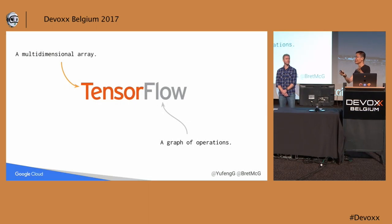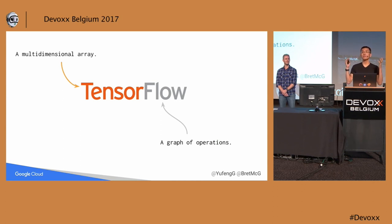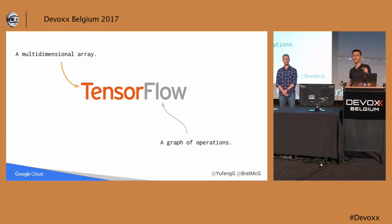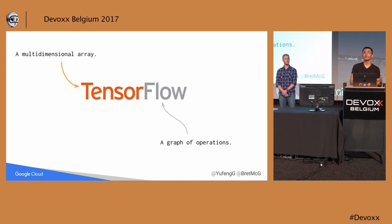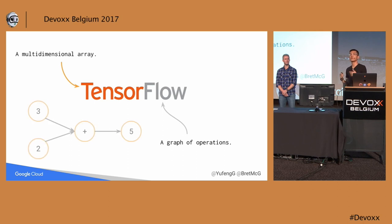To do all of this, we are powering this machine learning using Google's open source machine learning library called TensorFlow. TensorFlow is a multi-dimensional array — just like a matrix, an array of numbers, maybe nested arrays. And the 'flow' part means that these arrays of numbers are flowing through a computational graph.